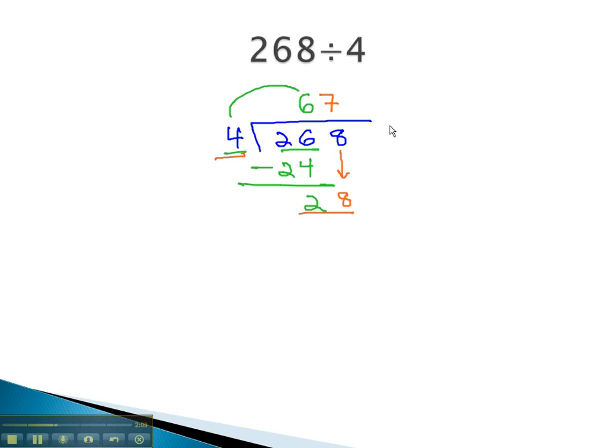4 times 7, multiplying again, is 28, and when we subtract, we get 0. We now have our final solution of 67. 268 divided by 4 is 67.